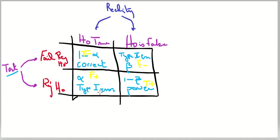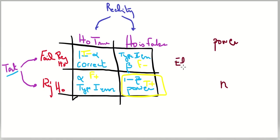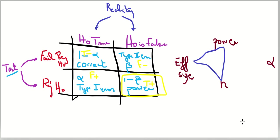In this video we're going to talk about the things that impact power. In reality it's a triad of three things: power, sample size, and effect size. To be complete, alpha is part of the relationship as well, but we're going to focus on these three and how they are related.